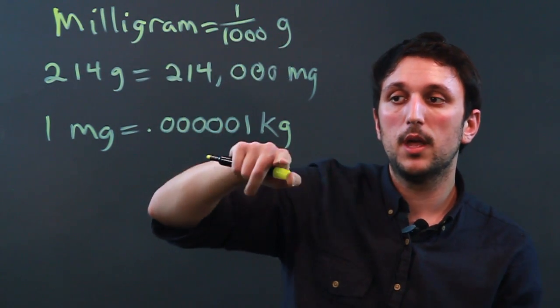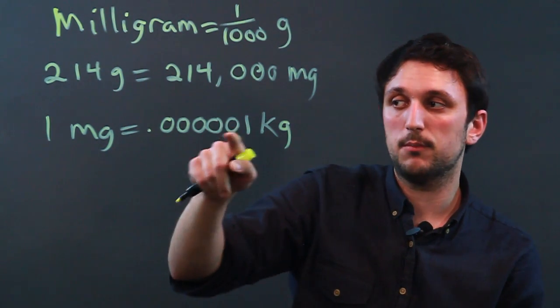a milligram is a thousandth of a gram and a kilogram is 1,000 grams, so it's a thousand times a thousand.